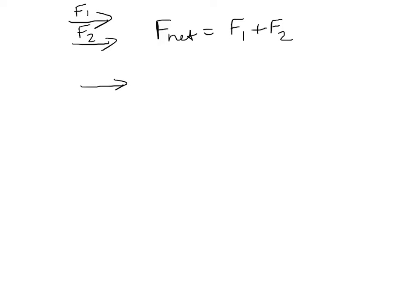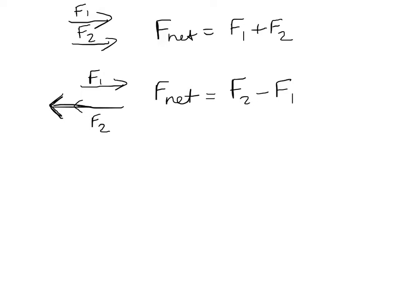If we have two forces in opposite directions, they could cancel each other out. If they canceled each other out, the net force would equal zero and F1 would equal F2. But if F2 is a little bit longer than F1, they don't totally cancel — we subtract. We take the bigger one minus the smaller one.